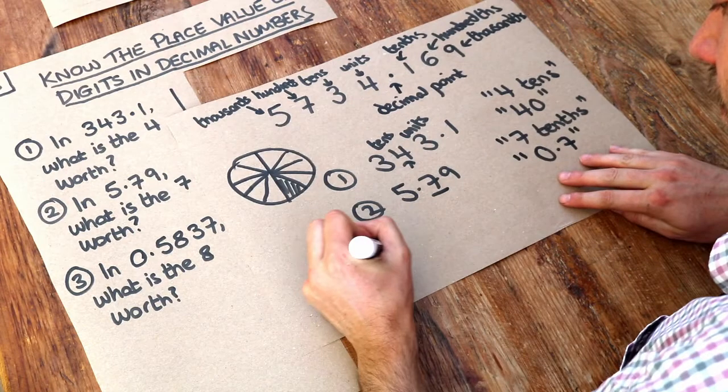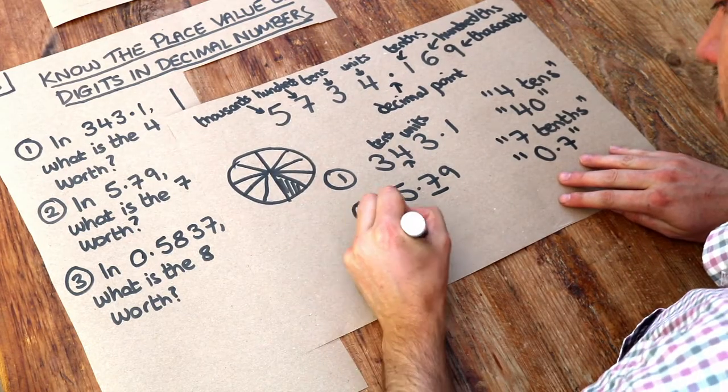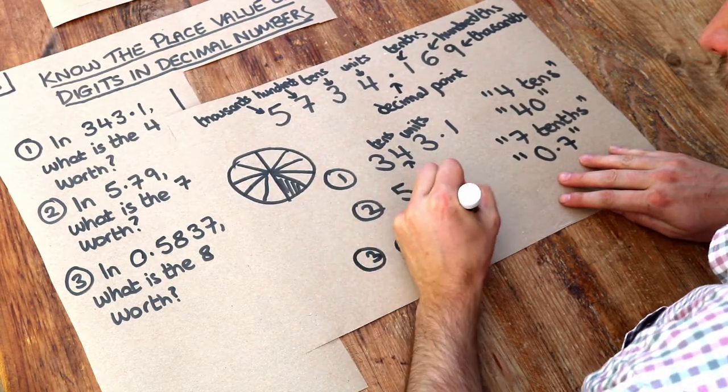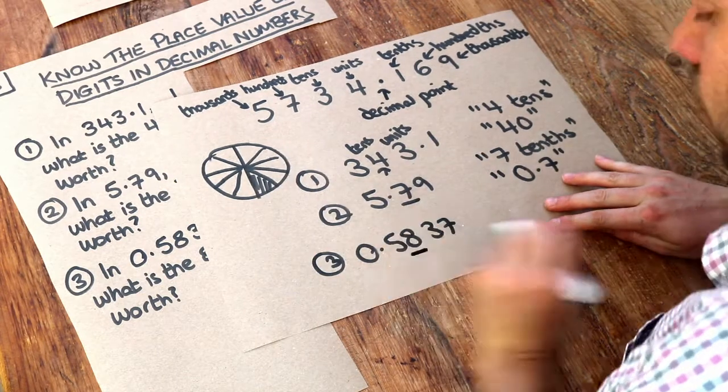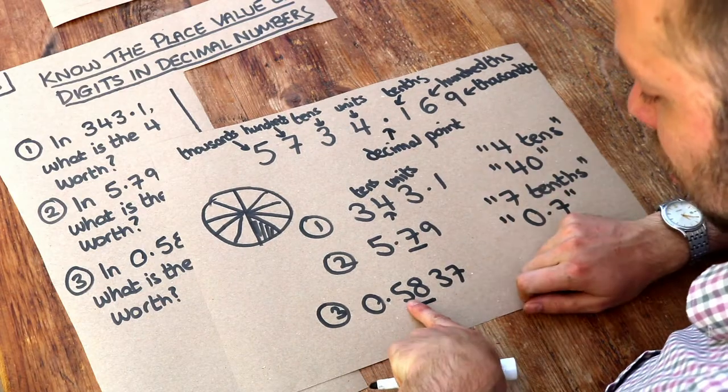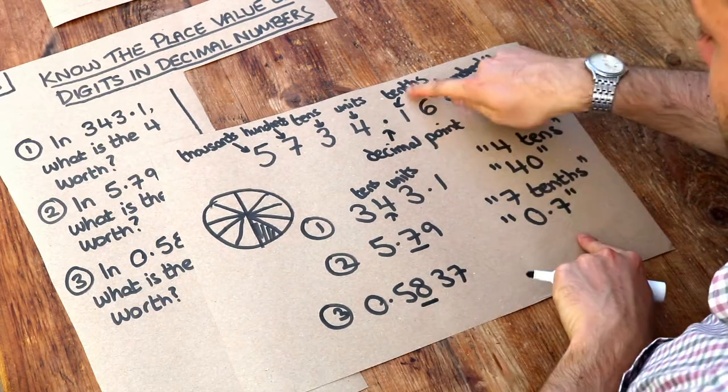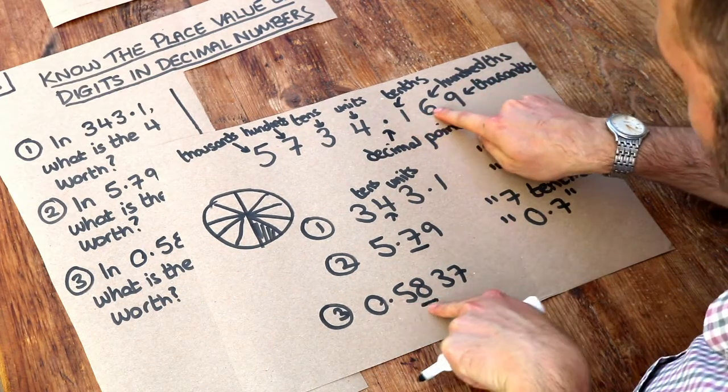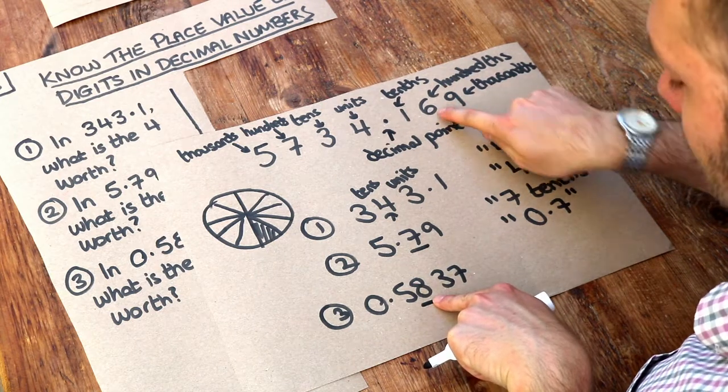The last one: In 0.5837, what is the eight worth? Let's look at the example. The digit just right of that decimal point is the tenths digit. Go one along, and the next digit is the hundredths digit.